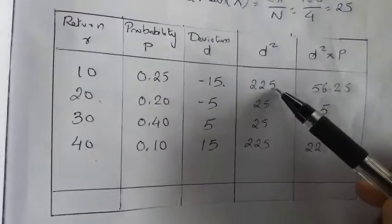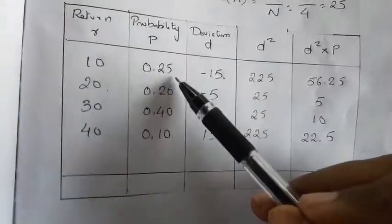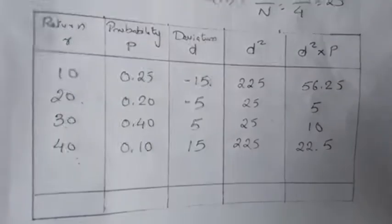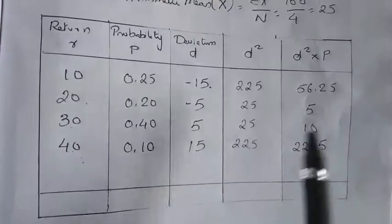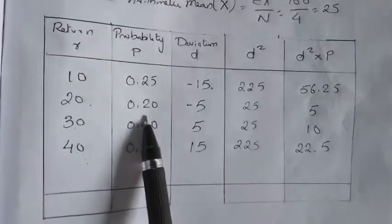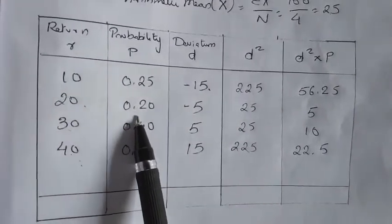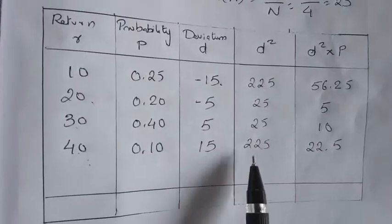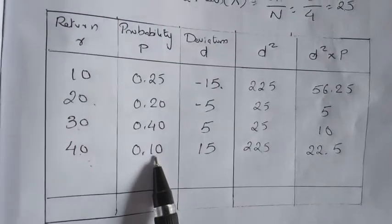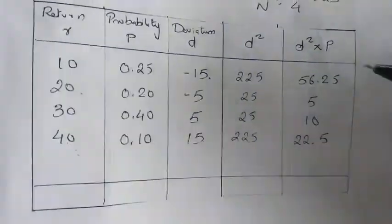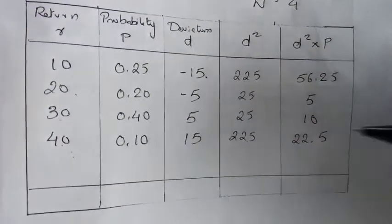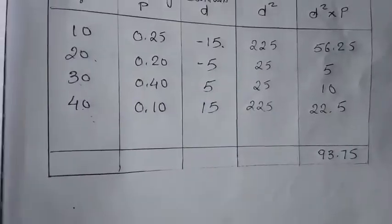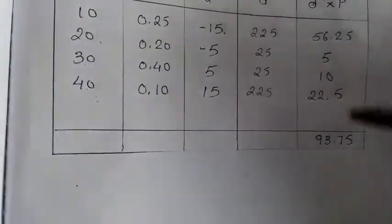Multiply 225 by 0.25 — you will get 56.25. Then 25 into 0.20 gives you 5. Then 25 into 0.40 gives you 10. And 225 into 0.10 gives you 22.5. Then add all of these. The variance total is equal to 90.25.